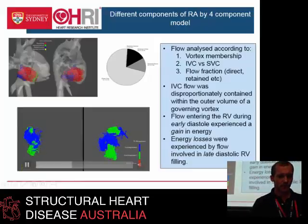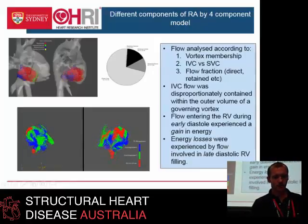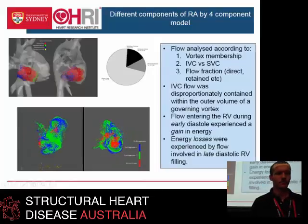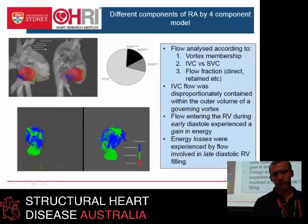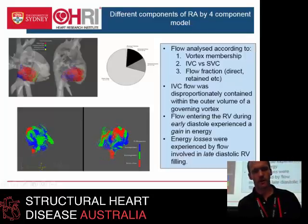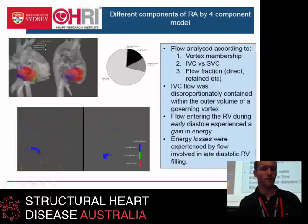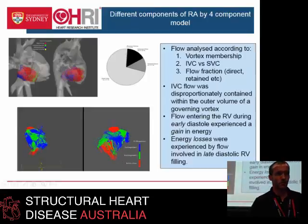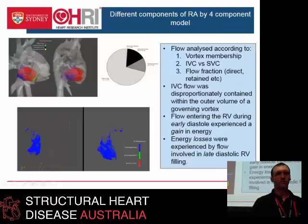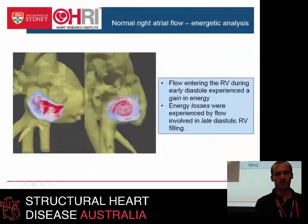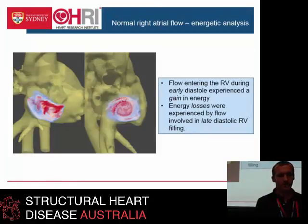We've tagged the flow according to what phase it's coming from, and we can get numbers out of that about whether something goes straight through the RA, whether it stays for one cycle, or whether it stays for longer - which is basically never in a normal RA. So if someone had a disturbance in that, once we get to the point where there's normal values, we could be very specific about the degree of dysfunction that's present in the RA. Here's a map of kinetic energy in two different views.